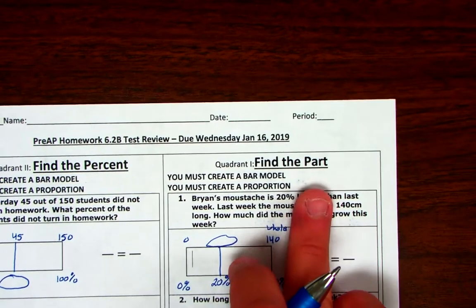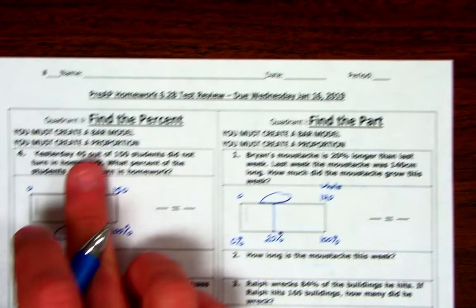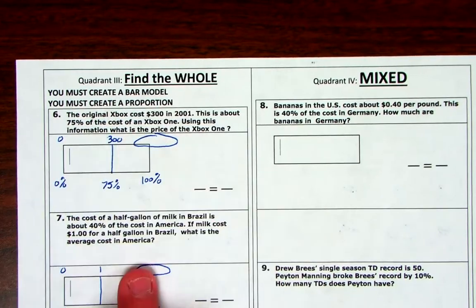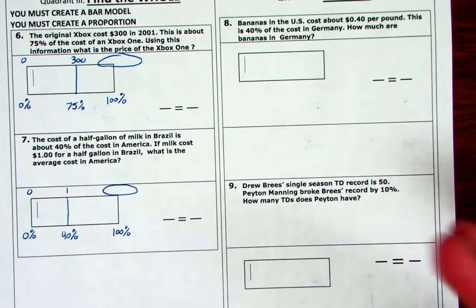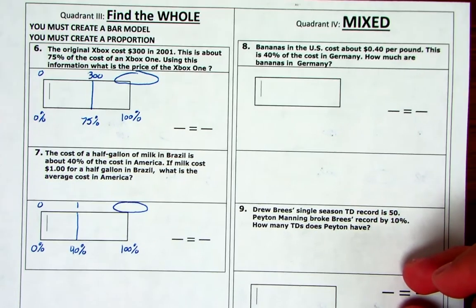So I've set up finding the part, finding the percent, finding the whole. Now these are mixed. So these are on your own. You've got to figure this out on your own. So if you're in regulars, you can now turn off this video. Pre-AP.